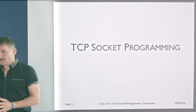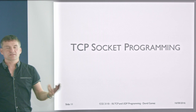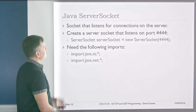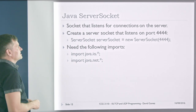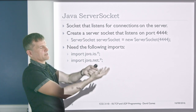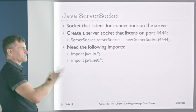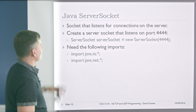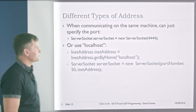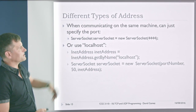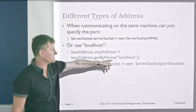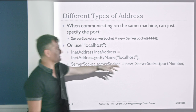So the first thing I'm going to talk about is TCP socket programming. Java has a nice class called ServerSocket that listens for connections on the server. We need a program running on the server that listens for a connection on a particular port, and then our client connects to that program on that port. Once connected, we can read and write to and from the two sockets. We create the server socket with new ServerSocket, importing the necessary libraries. We need to use the Java InetAddress class — we can create it by name, such as localhost or an IP address — and then create the server socket with a particular port number and internet address.